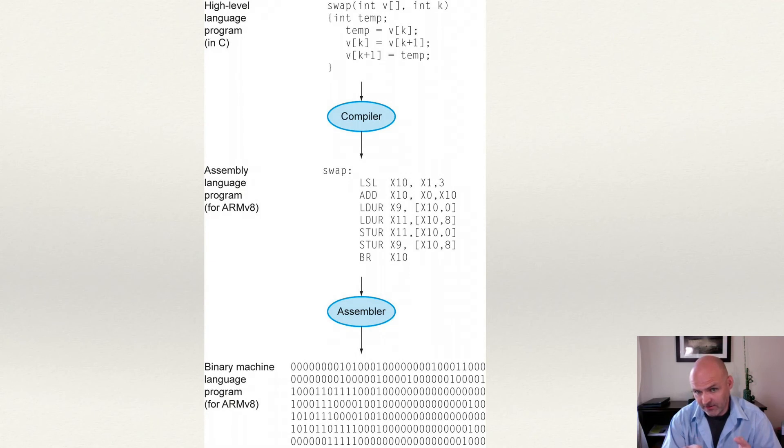Now, this Assembler that we're looking at in this example is for ARM version 8. ARM is a processor that you commonly find in mobile devices, although we find it in more and more things these days, including some PC-level platforms as well. We're going to talk a lot about the different processor platforms in some future videos. But this Assembler is specific to that platform.